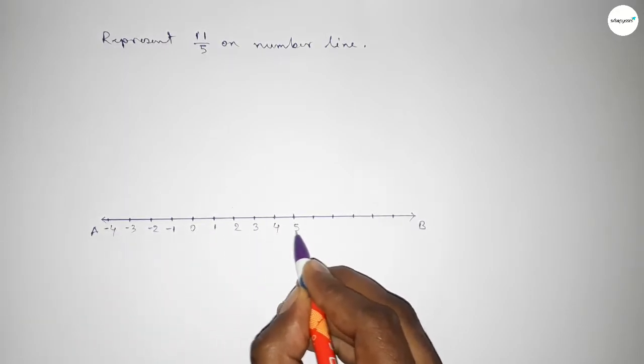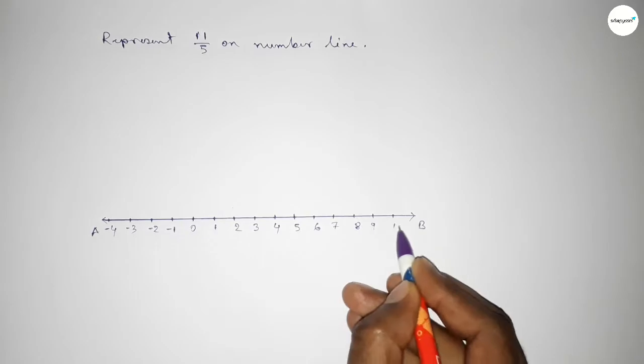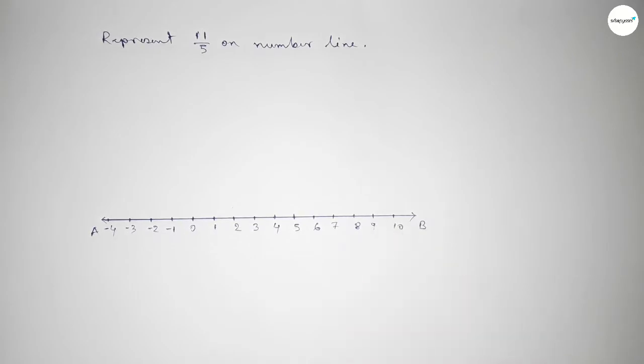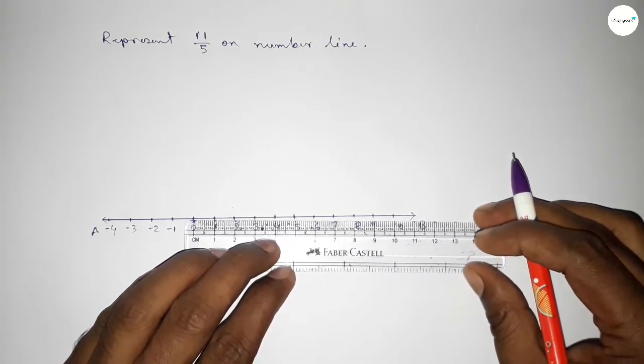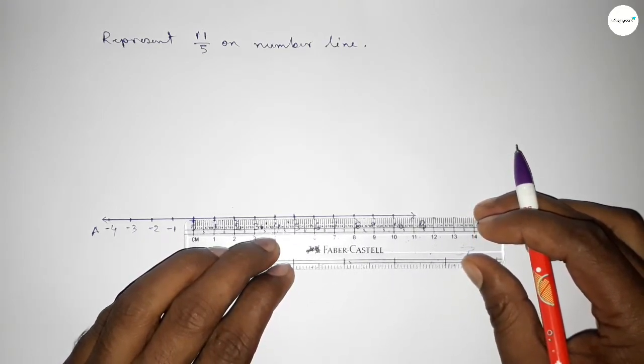Now we have to divide the distance between any two numbers into five parts. If you divide the distance between any two numbers into five parts, then the length of each part is 0.2 unit.